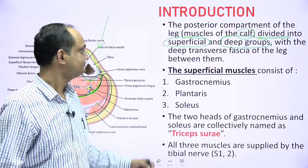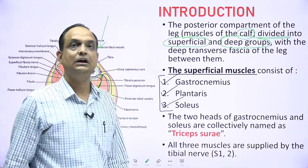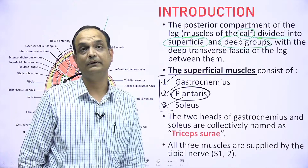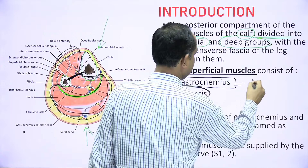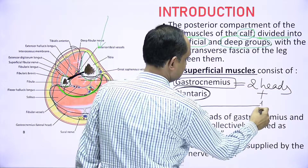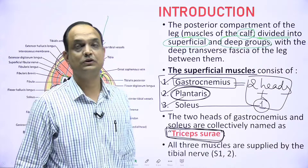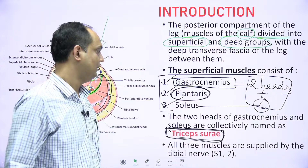The superficial group has three muscles: gastrocnemius, plantaris, and soleus. Plantaris is a very small muscle and may sometimes be absent. Gastrocnemius and soleus are the two big muscles of the calf. The two heads of gastrocnemius plus soleus are collectively named triceps surae — a very commonly asked exam question.